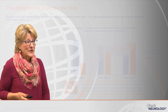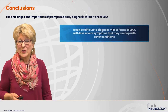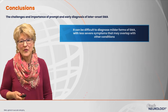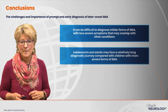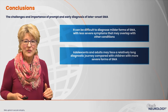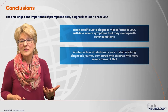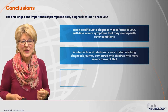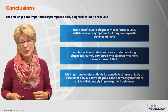The challenge and importance of prompt and early diagnosis for later onset SMA is real. It can be very difficult to diagnose milder forms of SMA with less severe symptoms that may overlap with other conditions, and adolescents and adults may face a long diagnostic journey. We now have newborn screening diagnosing patients very early, but we still have a prevalent population of older children and adults who remain undiagnosed. It's very important to refer patients for genetic testing as quickly as possible to achieve early diagnosis and allow early treatment, which ultimately will improve patient outcomes.